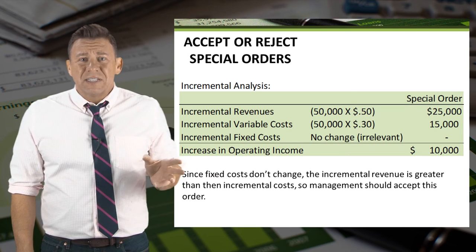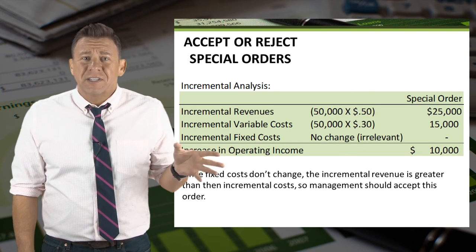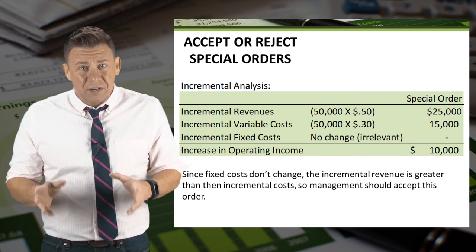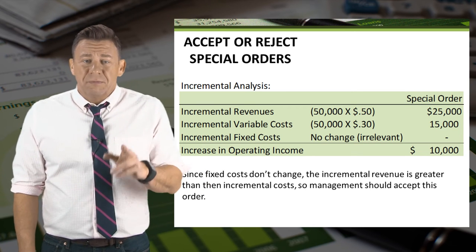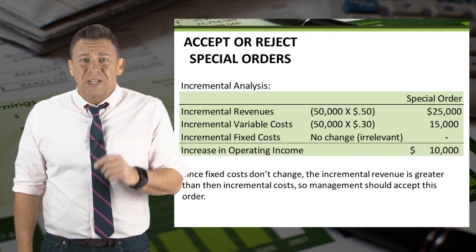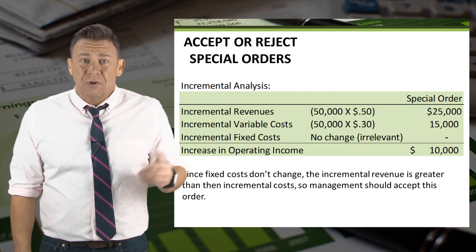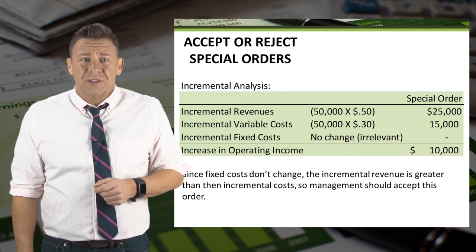Finally, there is not an incremental change in fixed costs, so they are irrelevant to this decision. Thus, management should accept this order because it increases operating income by $10,000.